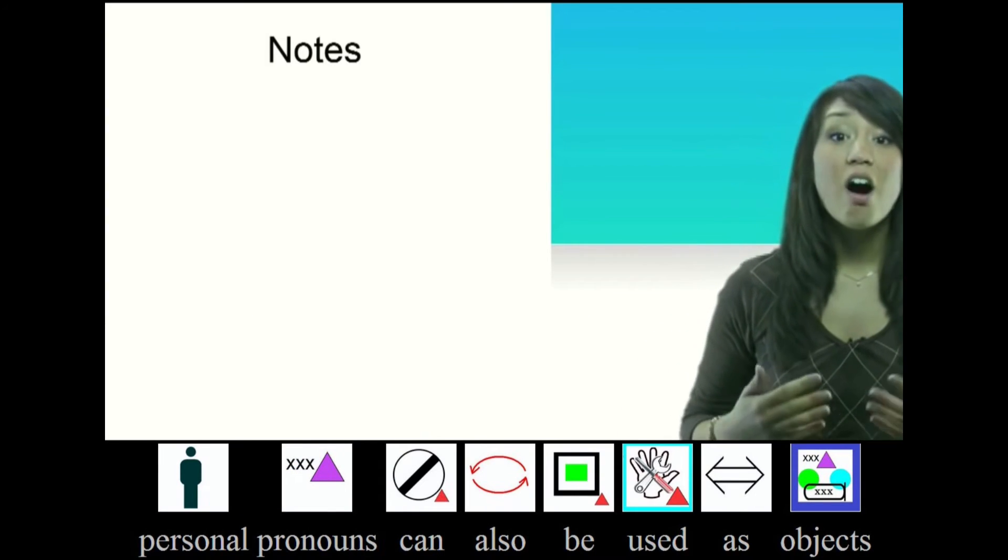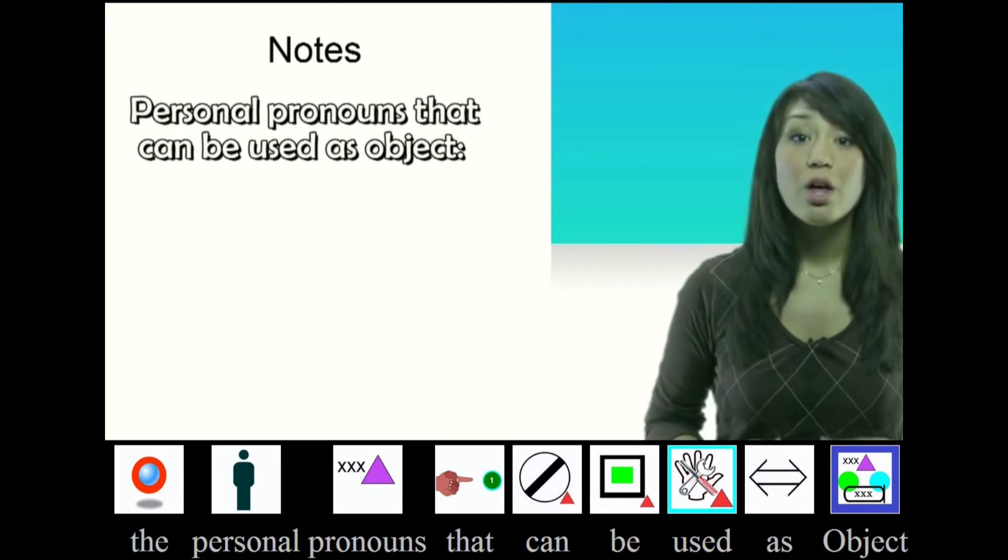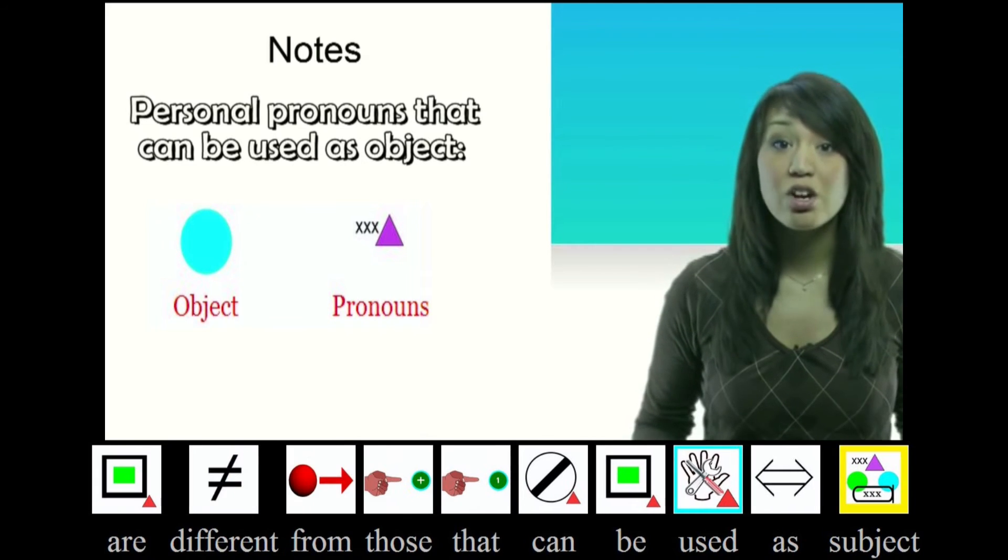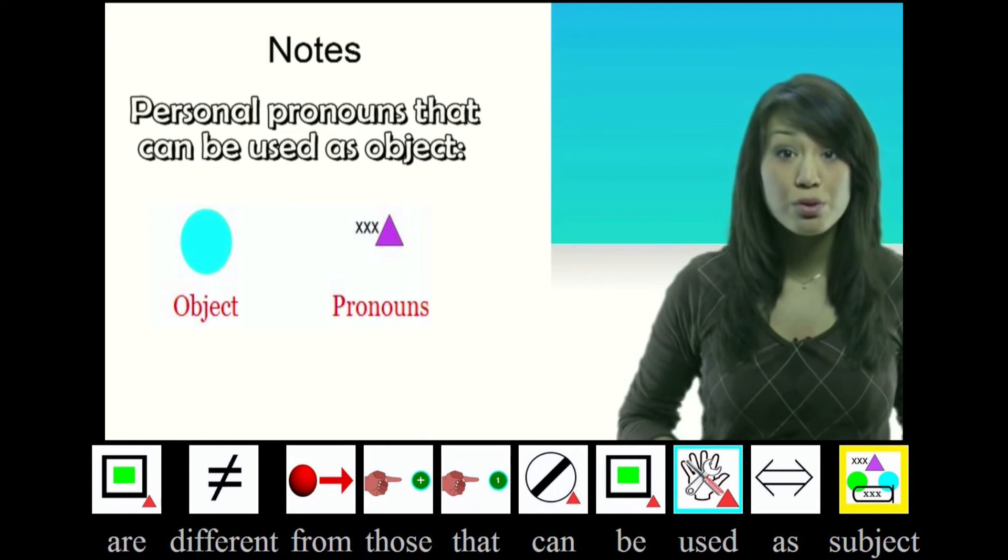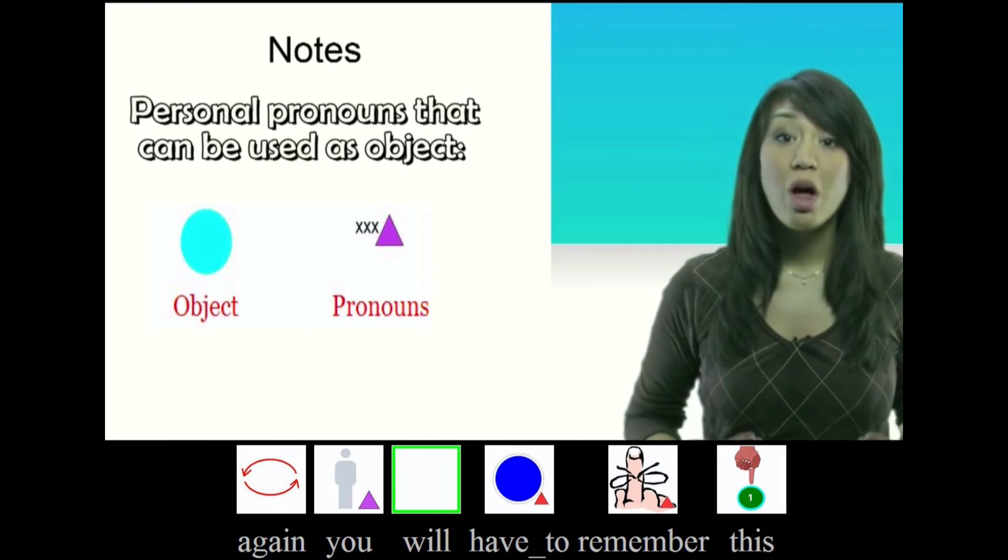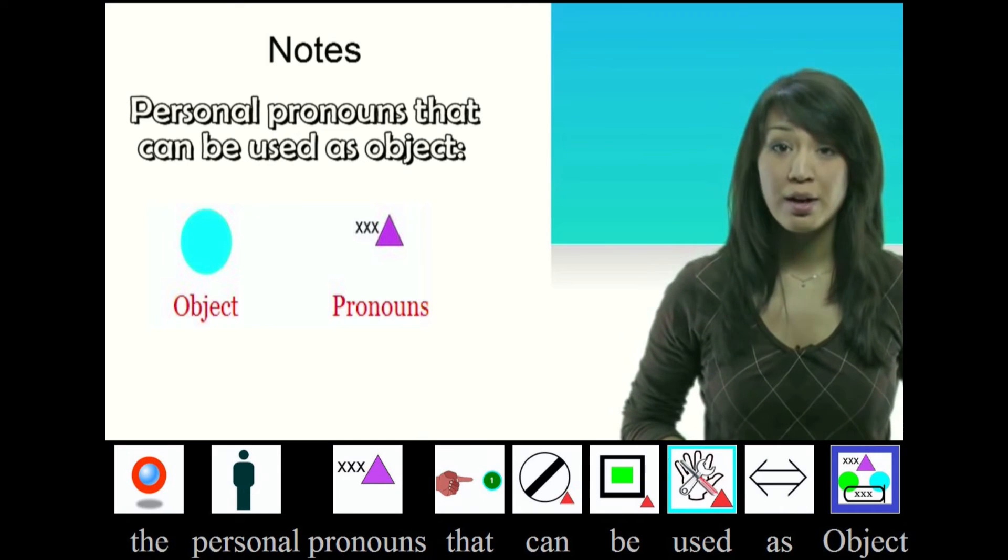Personal pronouns can also be used as objects. The personal pronouns that can be used as objects are different from those that can be used as subjects. Again, you will have to remember these. The personal pronouns that can be used as objects are: